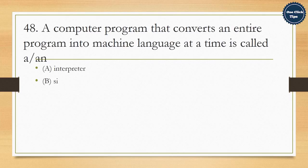48. A computer program that converts an entire program into machine language at a time is called A. Interpreter, B. Simulator, C. Compiler, D. Commander. The correct answer is C. Compiler.